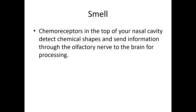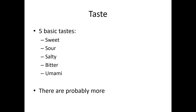Smell, also called olfaction, uses chemoreceptors at the top of the nasal cavity. They detect the shape of a molecule and release different neurotransmitters at different rates for each shape — that's how you differentiate the smell of a rose from a skunk. That information travels through the olfactory nerve (cranial nerve one) to the brain. There are five known basic tastes. Taste buds are on the tongue, and taste and smell are very intimately connected.